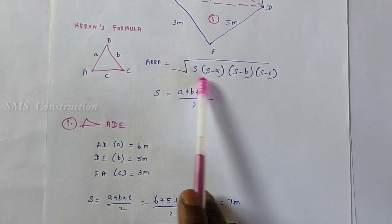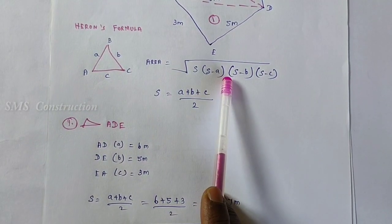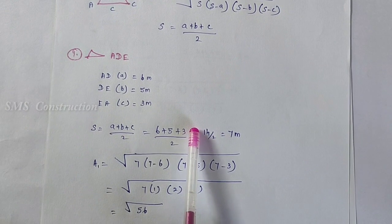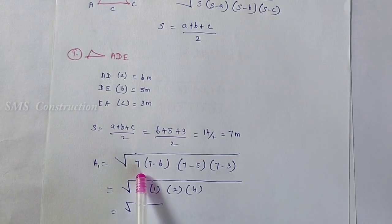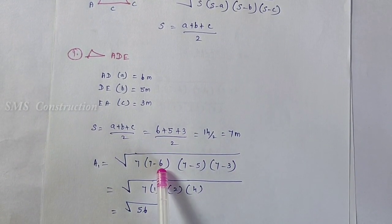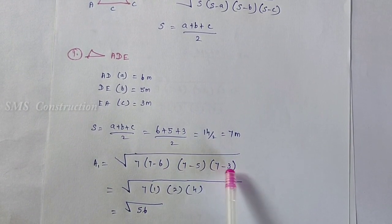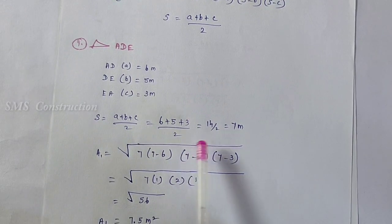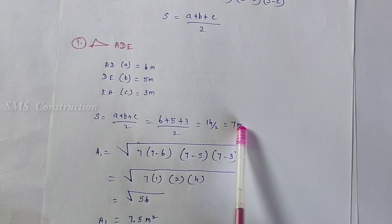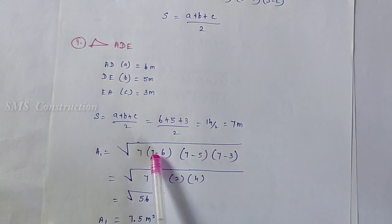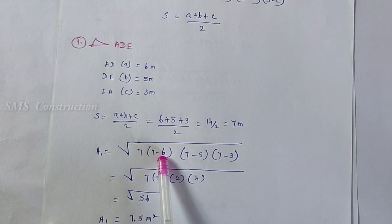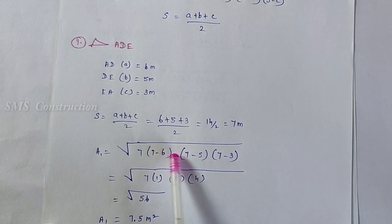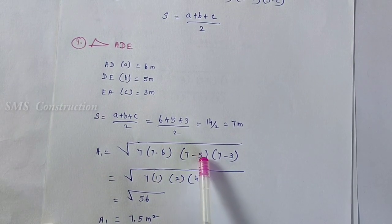The formula for area is the square root of S times (S minus A) times (S minus B) times (S minus C). S minus A is 7 minus 6. S minus B is 7 minus 5.